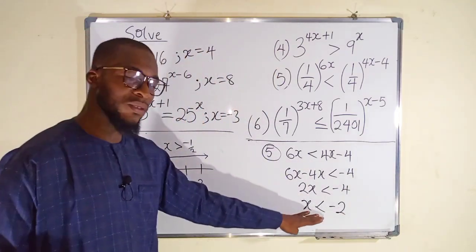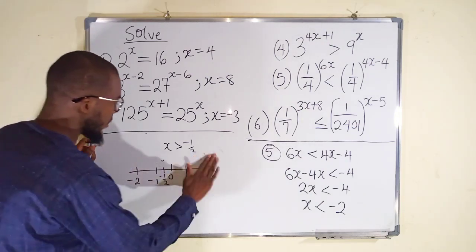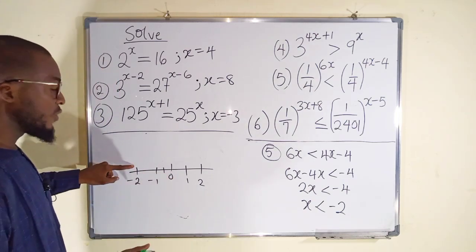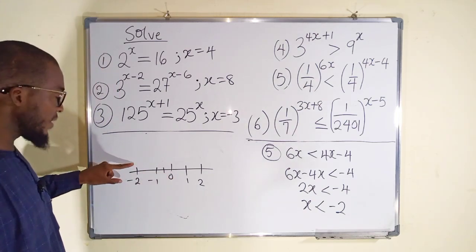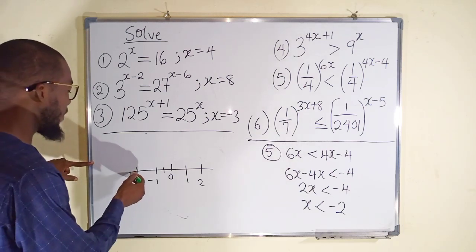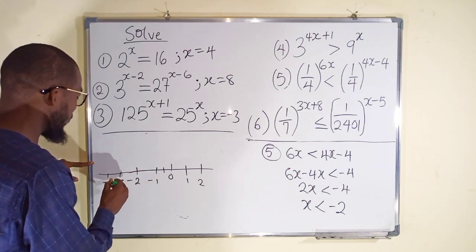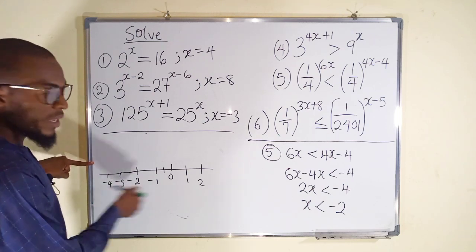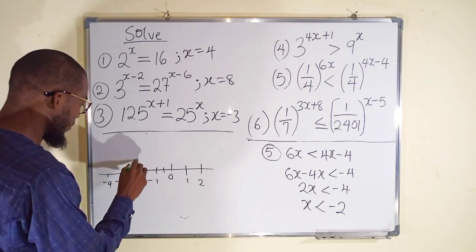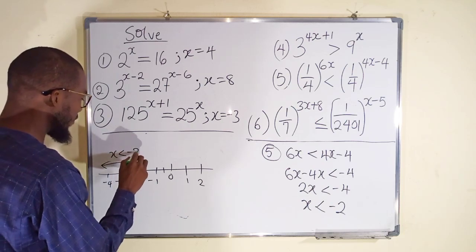We can also represent this on a number line. Locate negative 2. It means x is less than negative 2, so we are talking about values to the left — negative 3, negative 4, and so on toward negative infinity — excluding negative 2 itself. So we place an open circle at negative 2 with an arrow pointing left: x is less than negative 2.